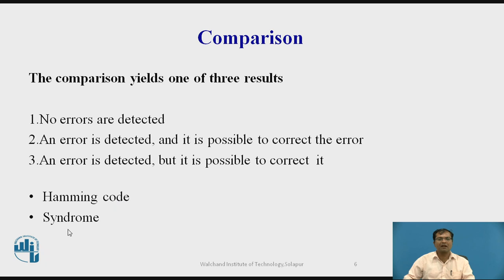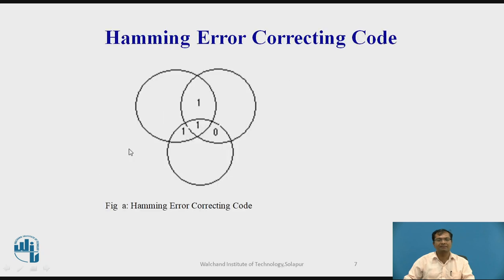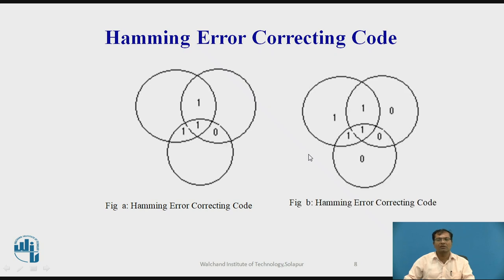Let us see the Hamming code and its syndrome to find the error. This diagram talks about Hamming error correcting code. There are three circles.